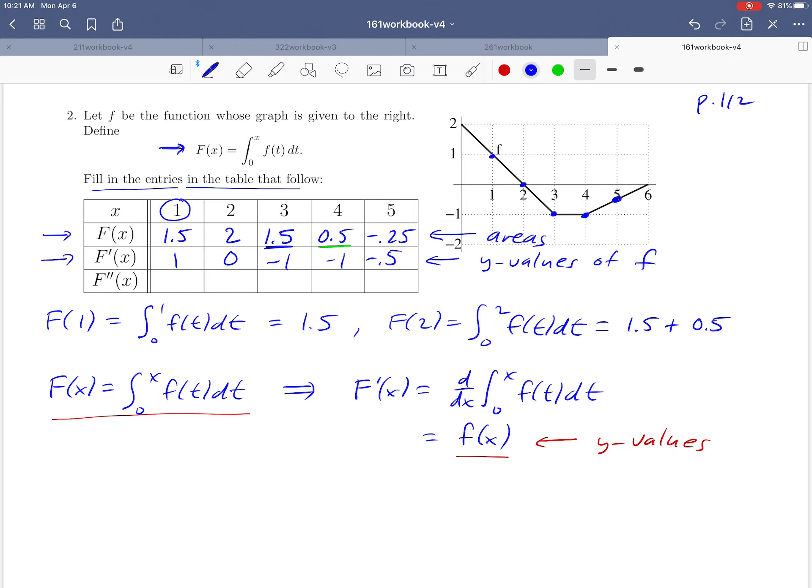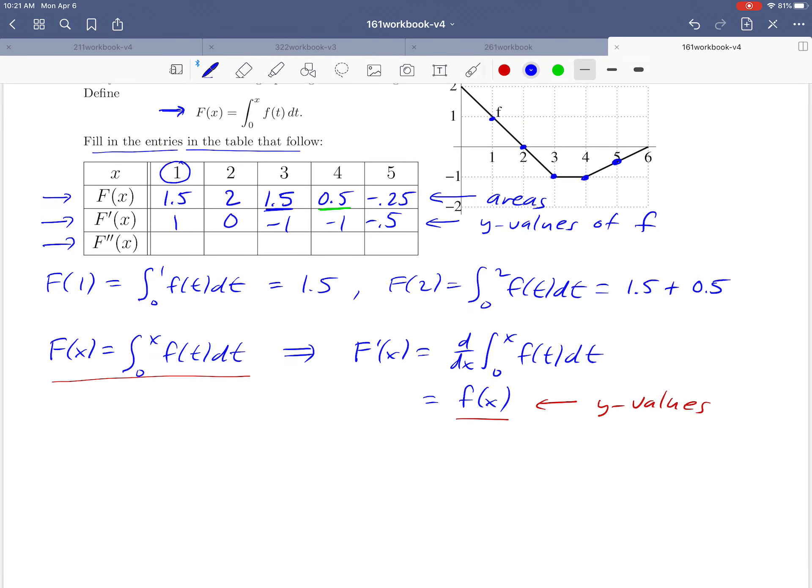For the third row, F''(x), we start with F'(x) = f(x). Taking the derivative of both sides gives F''(x) = f'(x). The derivative f'(x) represents slopes of the tangent line to f. So the third row asks for slopes of the graph of f.